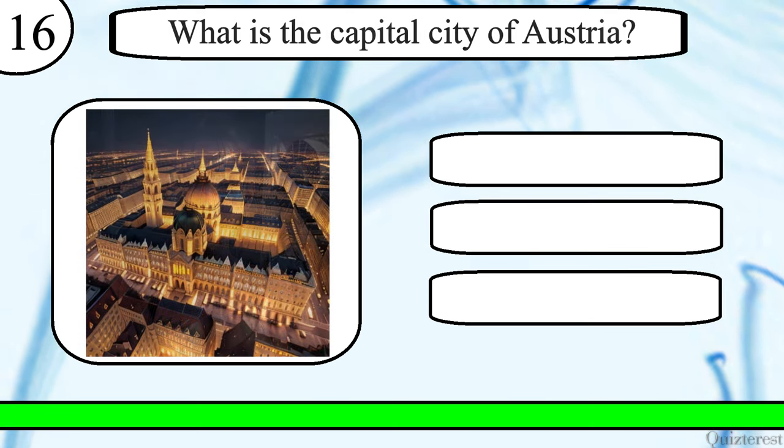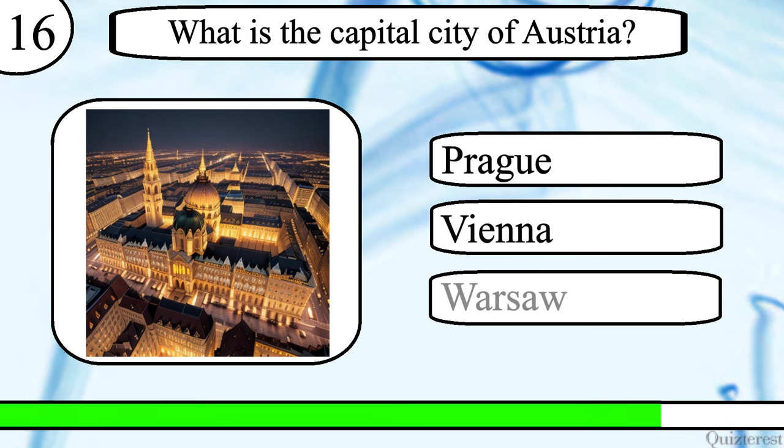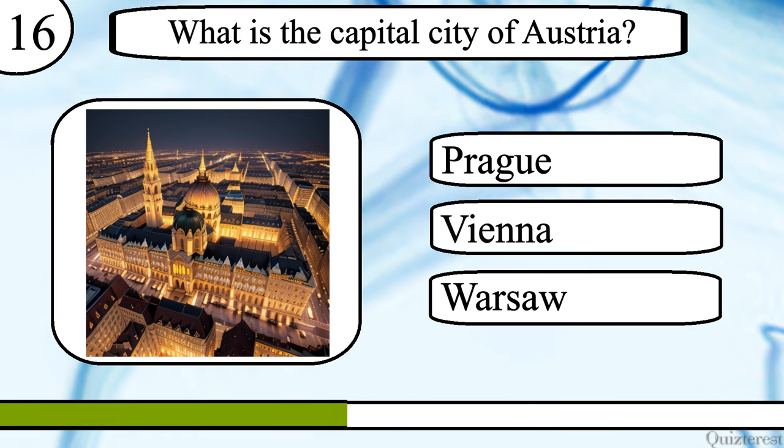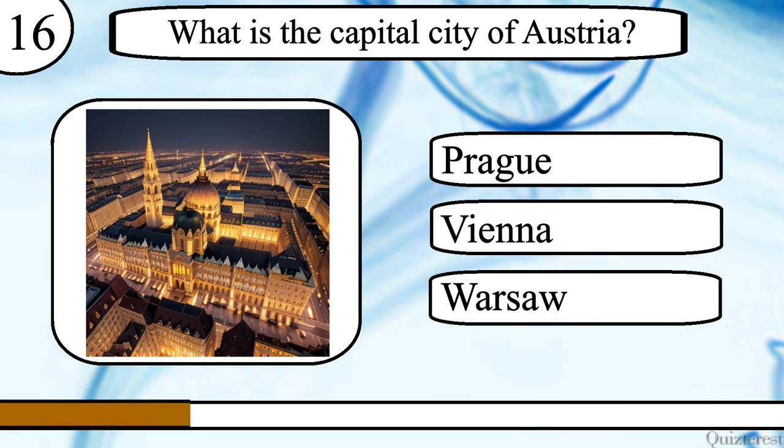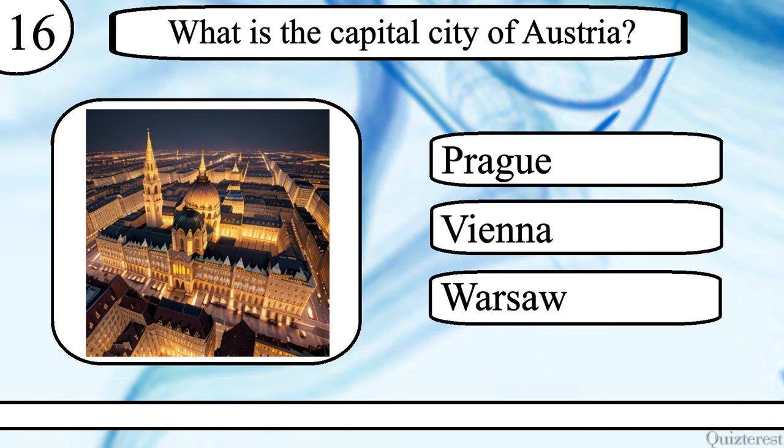Question 15. What is the capital city of Austria? Prague, Vienna or Warsaw? The correct answer is Vienna.